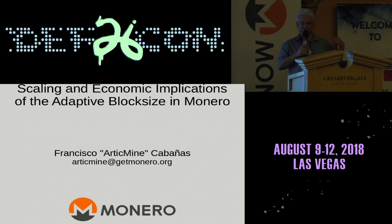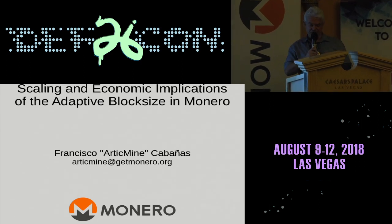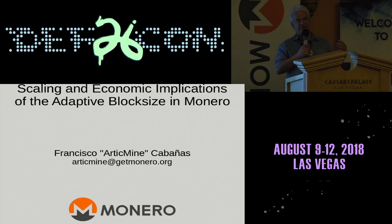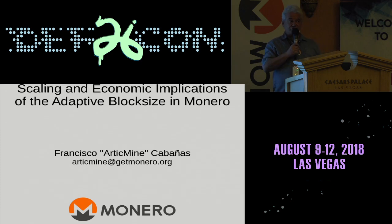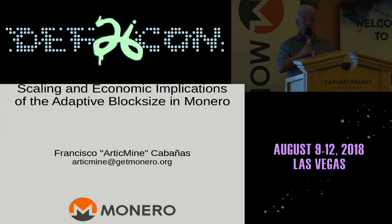I saw the crash in 2011 where Bitcoin went from $32 to $2. I got involved with Bitcoin through 2012 and 2013. One of the things that I did was ask the question: how can it fail? Where are the particular problems? So I spent a lot of time studying the scaling issue and the block size debate in Bitcoin.